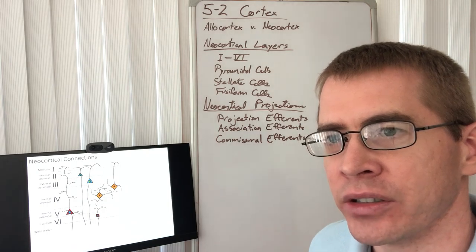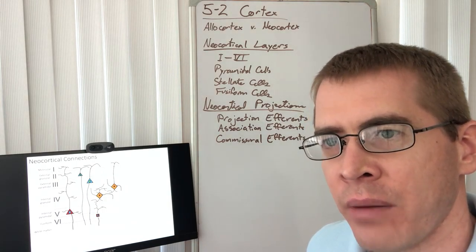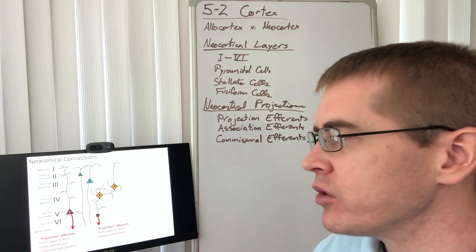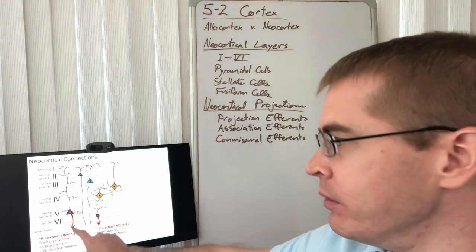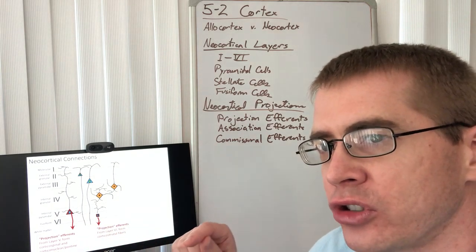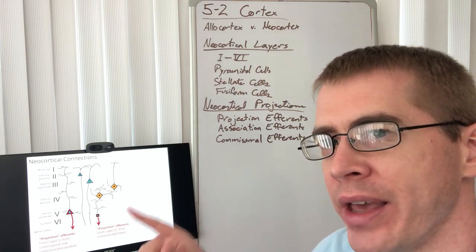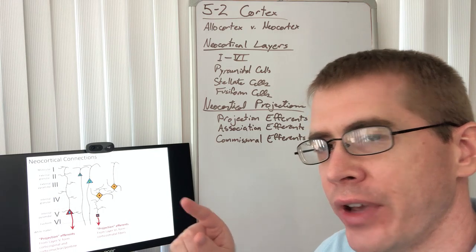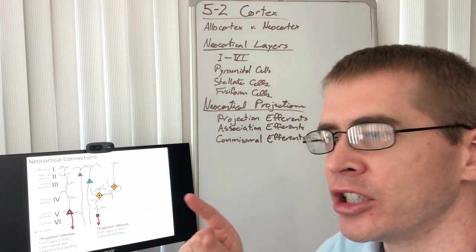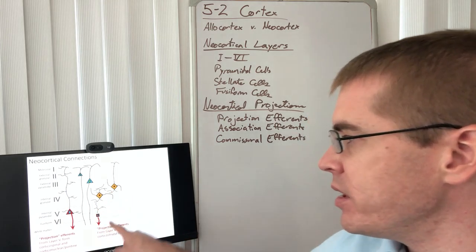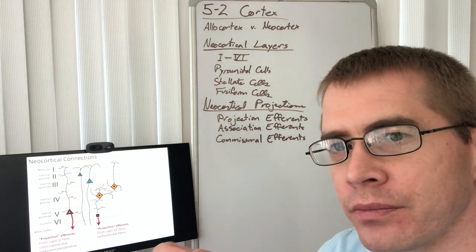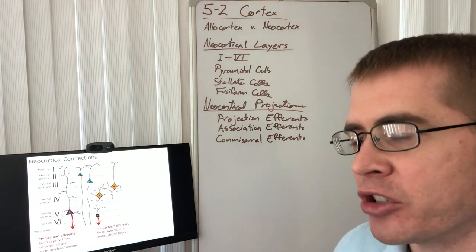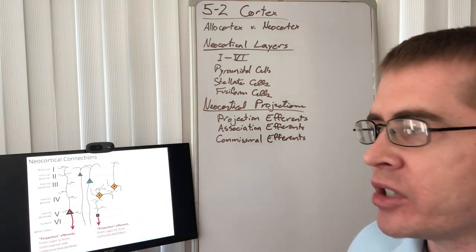Now let's talk about the neocortical connections that occur to and from the cortical layers. We have what are called projection efferents, which send their information out of the cortex to a subcortical target. That subcortical target may be the anterior horn of the spinal cord, the facial motor nucleus, or the trigeminal motor nucleus. In the case of layer six, it may be the striatum or the thalamus. These projections out of the cortex are called projection efferents because they are projecting out of the cortex to a subcortical structure.